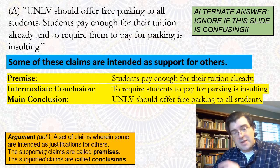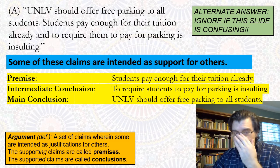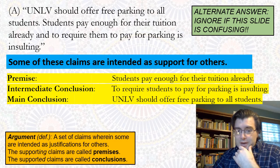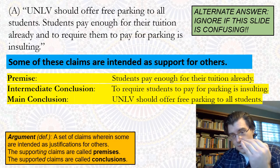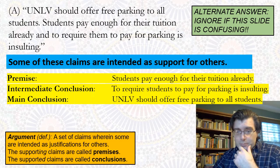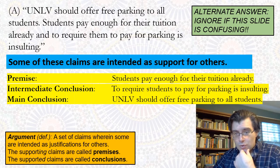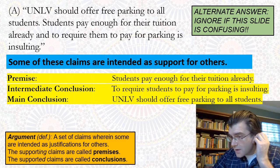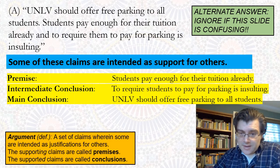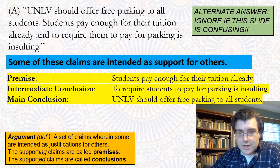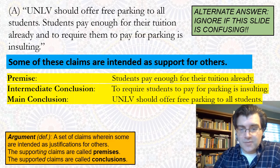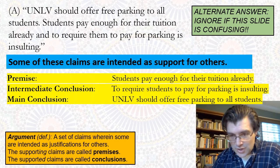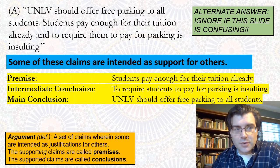Interestingly, that middle sentence serves both as a conclusion of another claim and as a premise in support of the main conclusion. So sometimes the same claim will serve both as a premise and as a conclusion — and that's what's captured in this alternative reading of the argument in this passage. If that's confusing, just ignore it for now; we're going to come back to it soon.